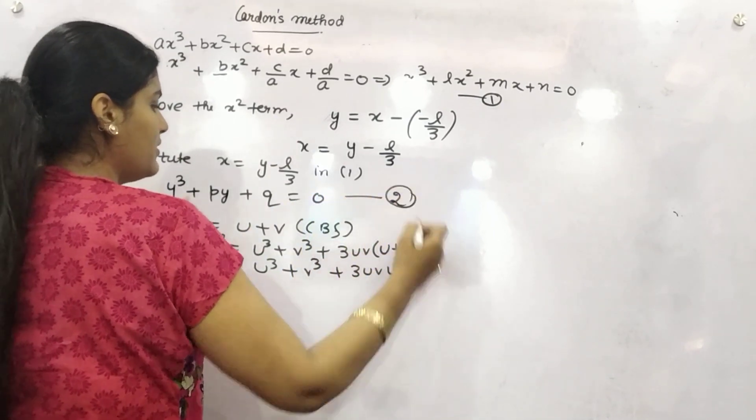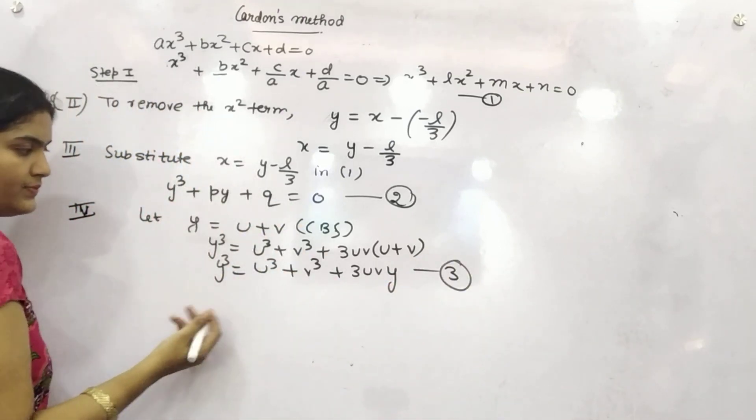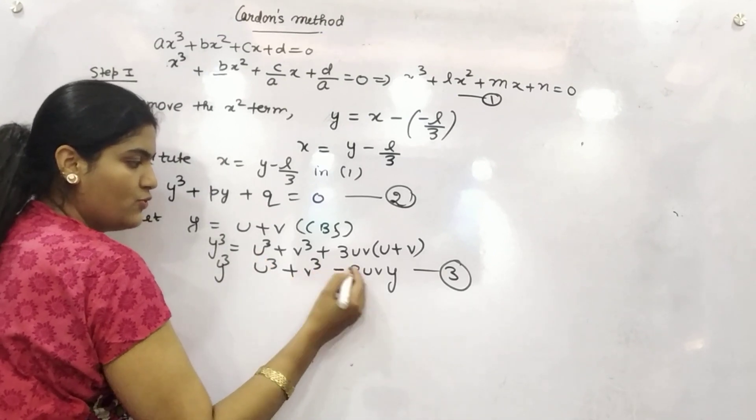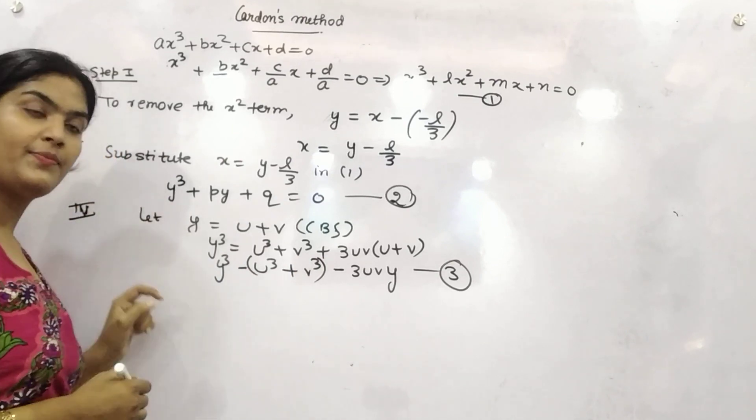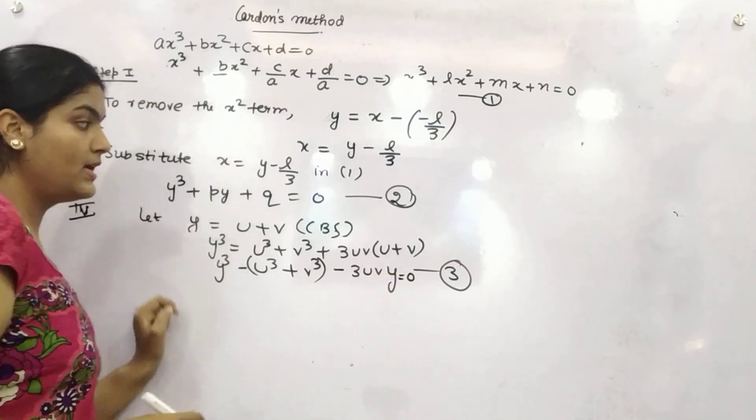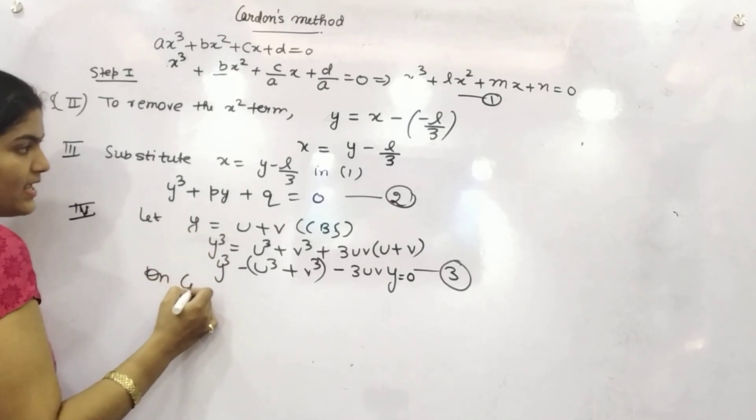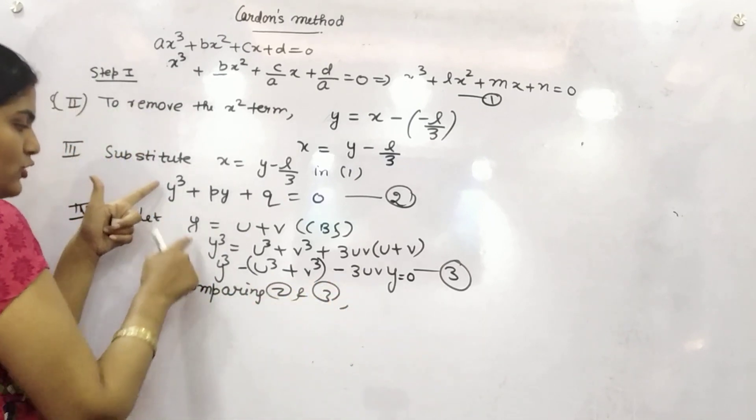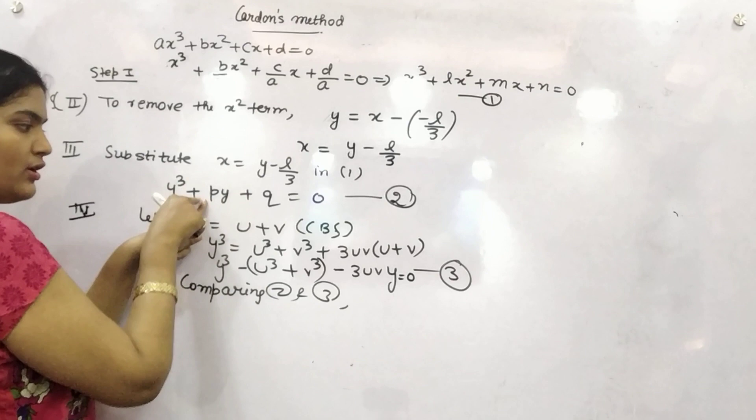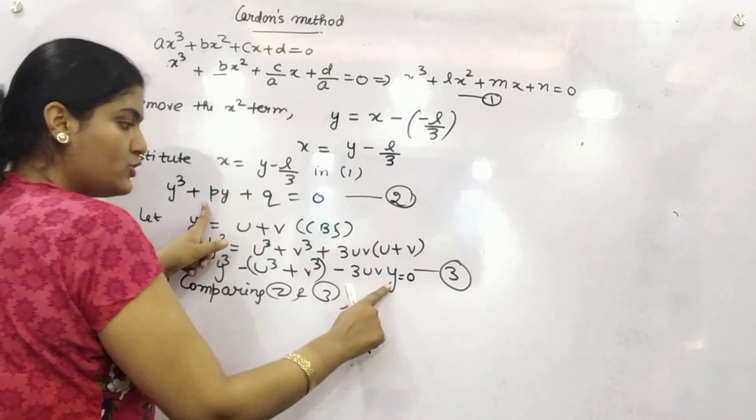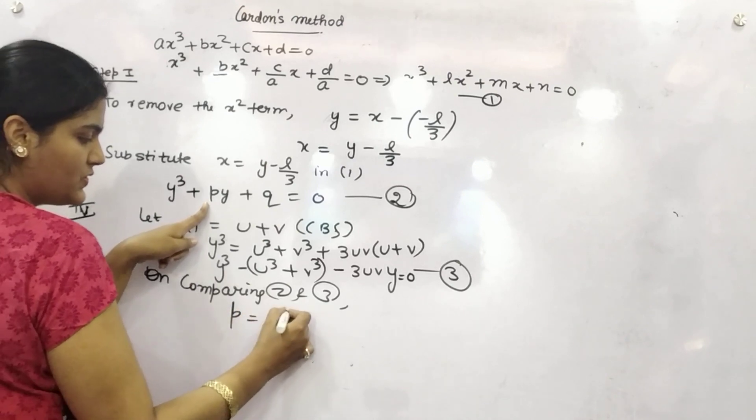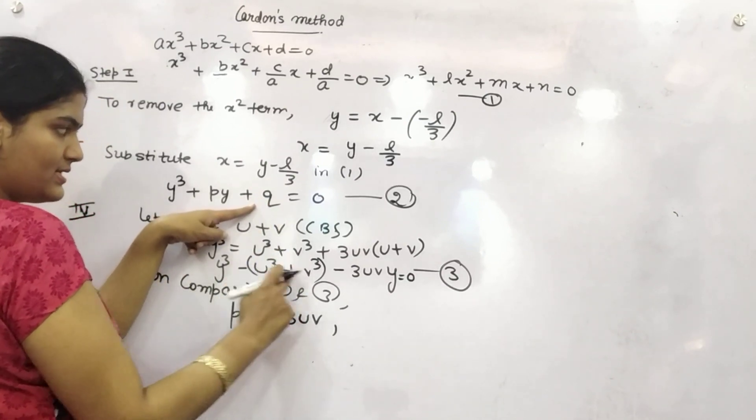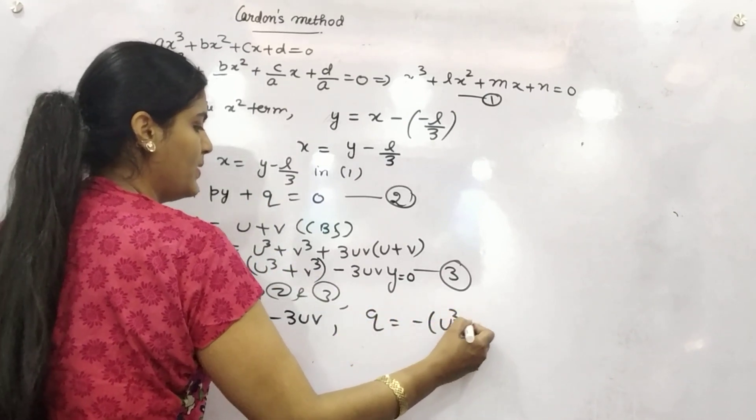Now, this is your second equation, this is your third one. If you compare both, if you take this into left-hand side, it will be y cube minus 3uvy minus u cube plus v cube equals 0. Now, if you compare second and third, what will you get? y cube is okay, your p will be the coefficient of y, so coefficient of y is minus 3uv. So p will be minus 3uv. Similarly, this is constant, so q is minus u cube plus v cube.